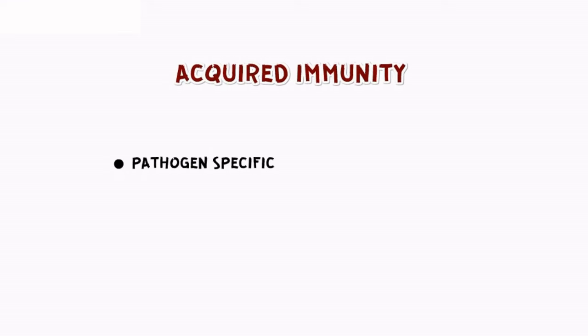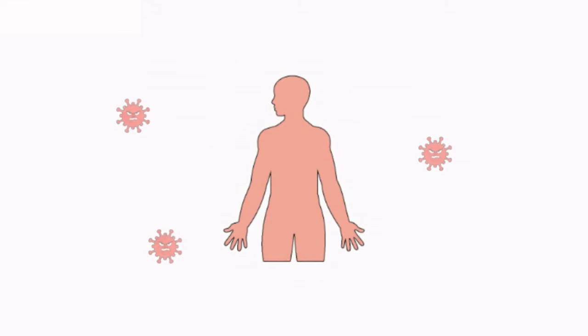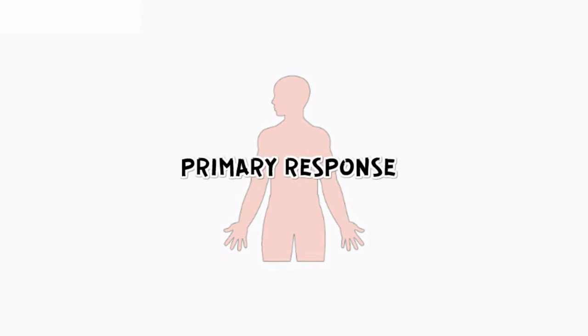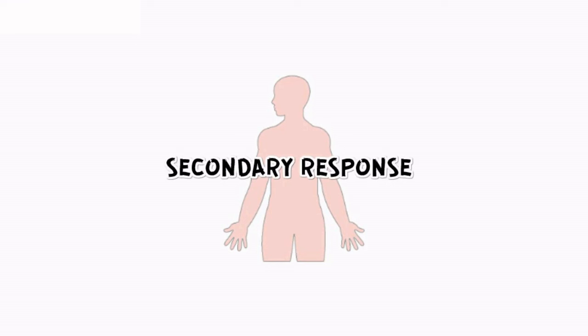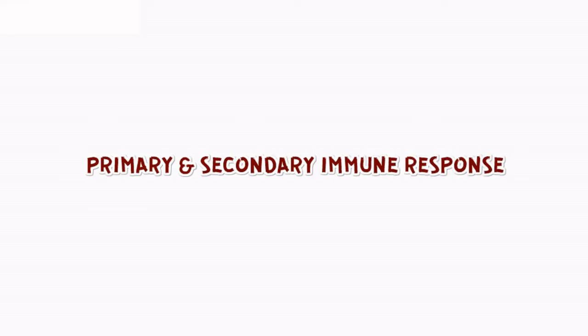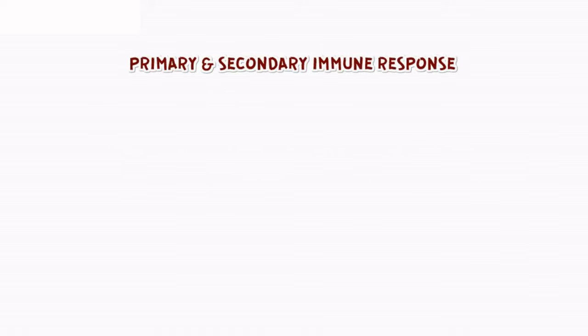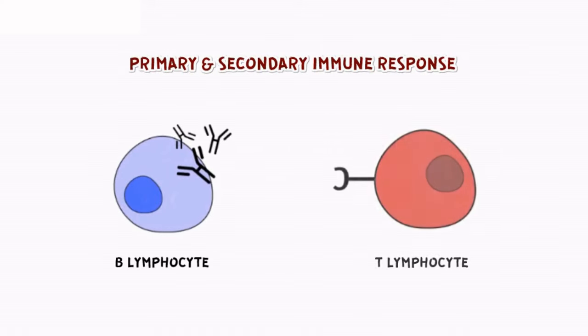On the other hand, acquired immunity is pathogen-specific. It is characterized by memory. When the body encounters a pathogen for the first time, it produces a response called the primary response, which is of low intensity. Subsequent encounters with the same pathogen elicit a highly intensified secondary or anamnestic response. The primary and secondary immune responses are carried out with the help of two special types of lymphocytes present in our blood: B lymphocytes and T lymphocytes.